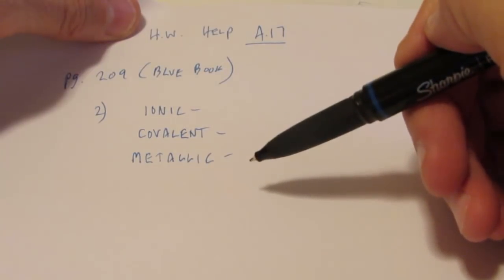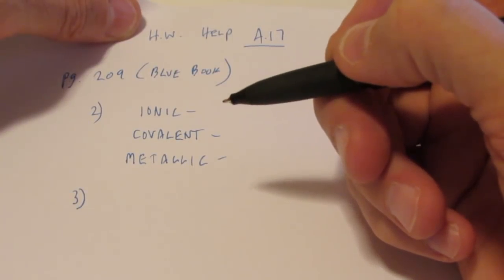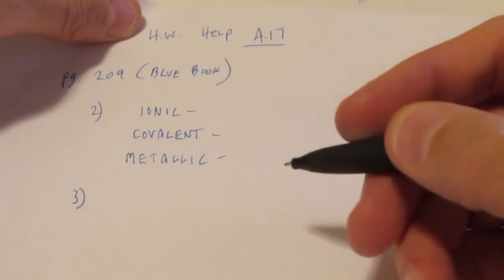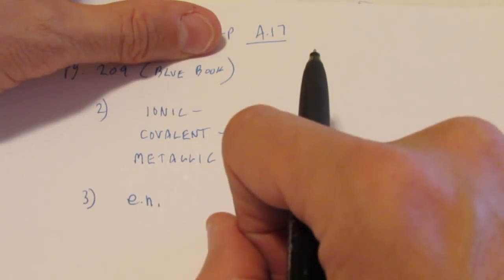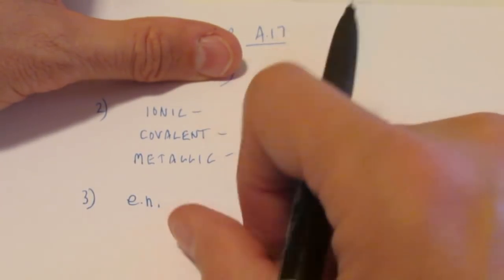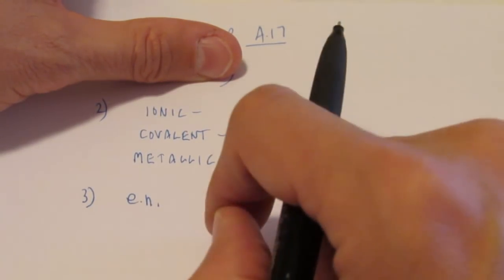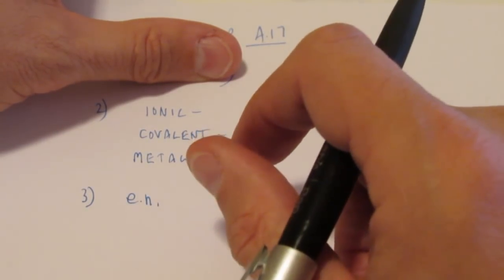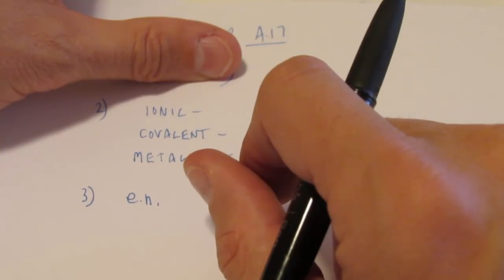So that's the first question on tonight's homework. Next question is number three. Number three says, what is the relationship between electronegativity and the ionic character of a bond? So the relationship between electronegativity and the ionic character. Remember electronegativity is how well two atoms share electrons. If there's unequal sharing, there's a big electronegativity difference. That means one atom has a high electronegativity and the other atom has a low electronegativity.